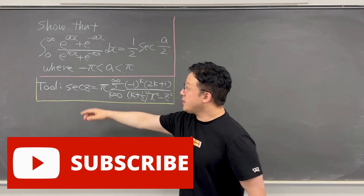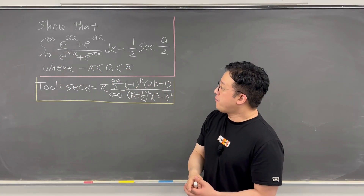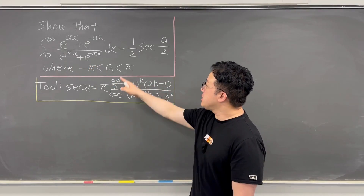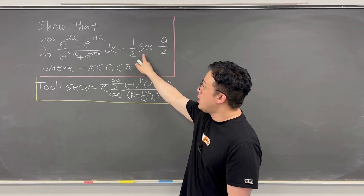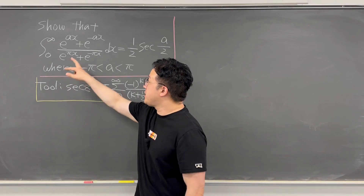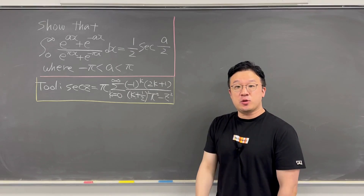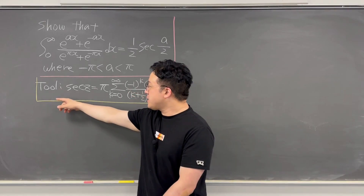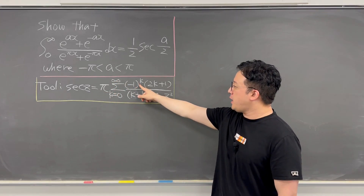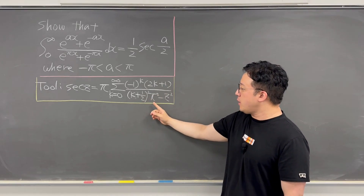Here's the first one. Show that the integral from zero to infinity of (e^(ax) + e^(-ax)) / (e^(πx) + e^(-πx)) dx equals 1/2 times secant(a/2), where a is between negative π and π. To solve this, I'll do a series expansion of the integrand in the parameter a, and work with the known partial fraction tool: secant(z) = π times the summation from k=0 to infinity of (-1)^k times (2k+1) / ((k + 1/2)²π² − z²).